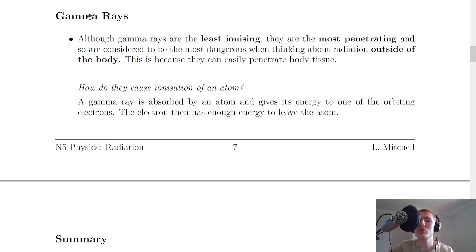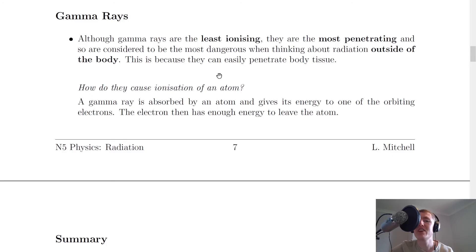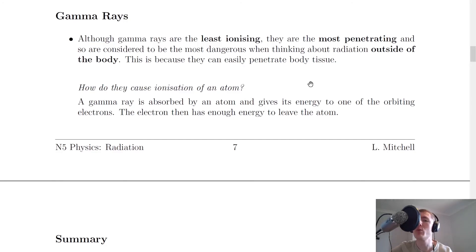Lastly, we'll look at gamma rays. Although gamma rays are the least ionizing, they are the most penetrating, and so they are considered to be the most dangerous when thinking about radiation outside of the body, because they can easily penetrate body tissue. It's important to remember that gamma rays are the least ionizing but the most penetrating. However, if gamma rays were inside the body, they wouldn't be thought to be very dangerous because they are not very ionizing.